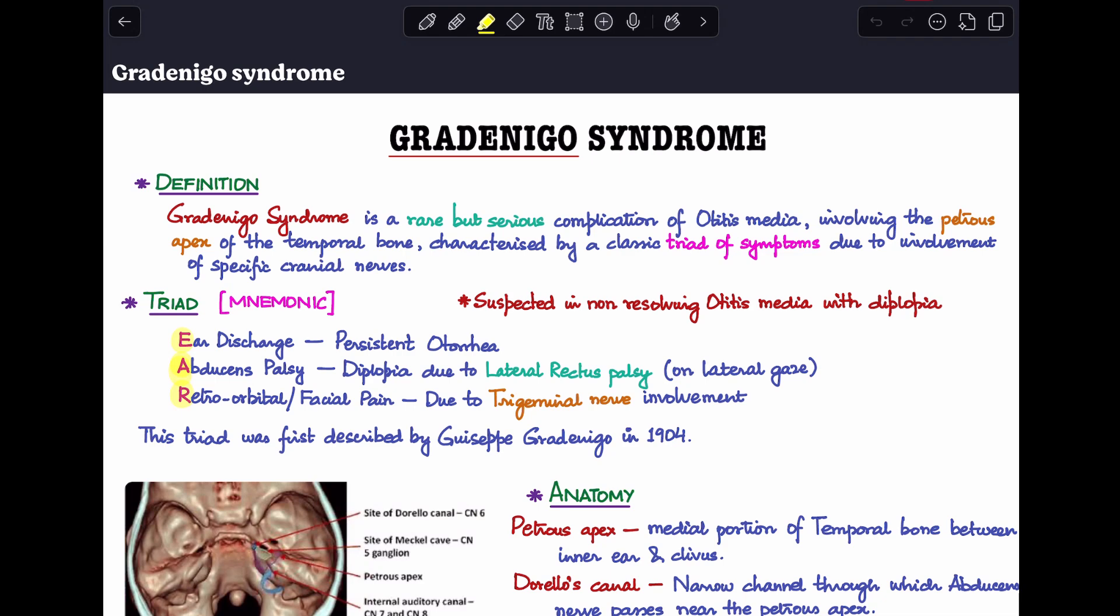Gradenigo's syndrome is a rare but very serious complication of otitis media which involves the petrous apex of the temporal bone and it is characterized by a classical triad of symptoms due to involvement of some cranial nerves.